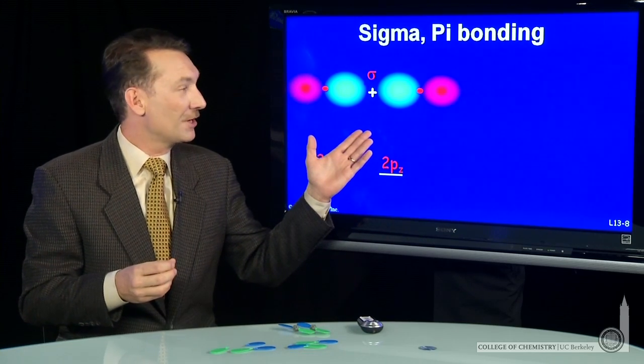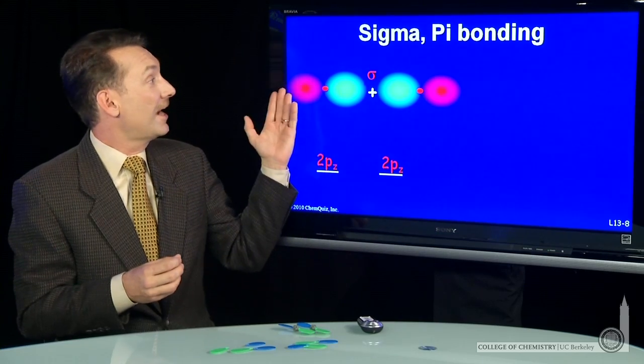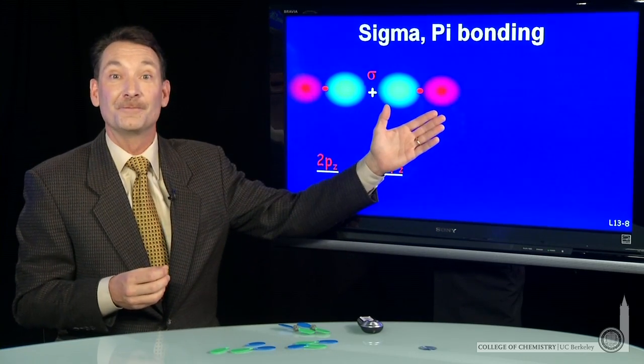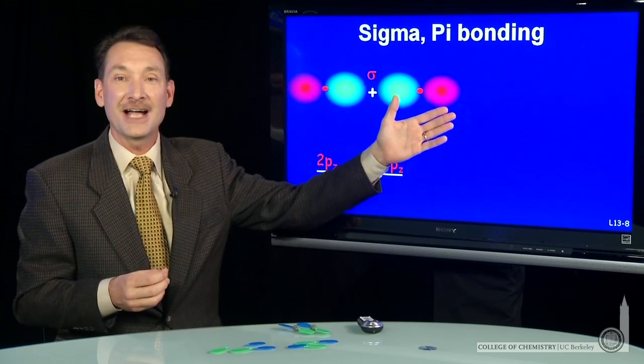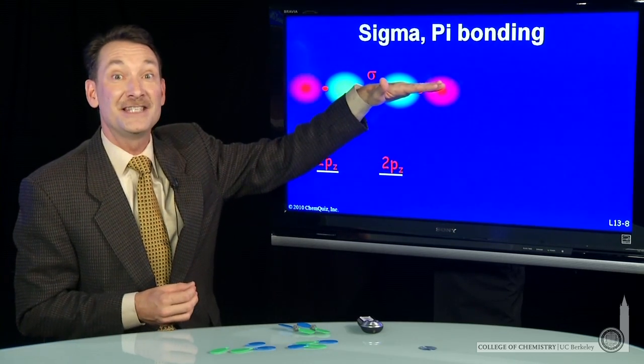My atomic orbitals, when I'm talking about the p orbitals, can be added and subtracted. I have to choose an internuclear axis, though. So I'm going to choose the internuclear axis, the axis that contains both nuclei, as the positive z axis.